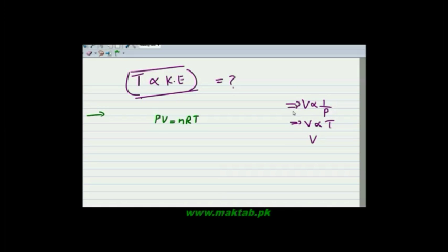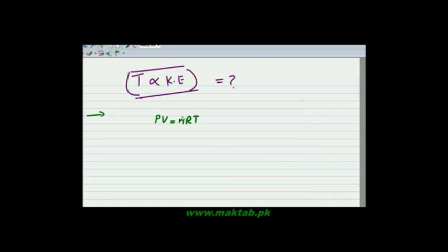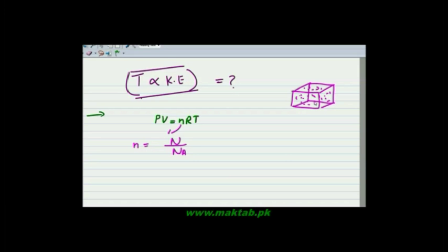We can also state the general expression of gases: PV = nRT. The volume is inversely related to pressure and directly related to temperature. Here n = N/Nₐ, where N is the total number of molecules and Nₐ is Avogadro's number. This gives us the total number of atoms or molecules divided by Avogadro's number.